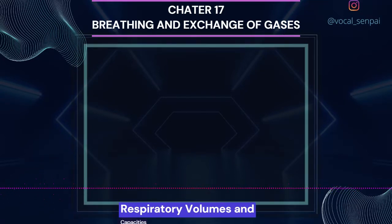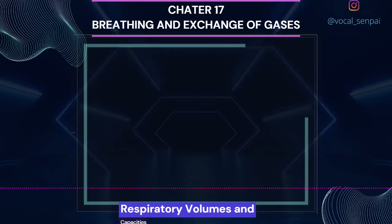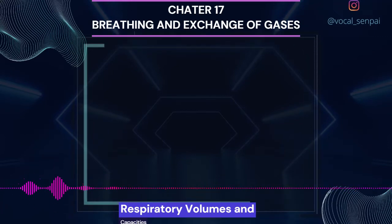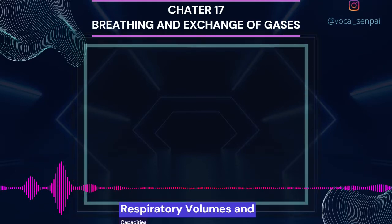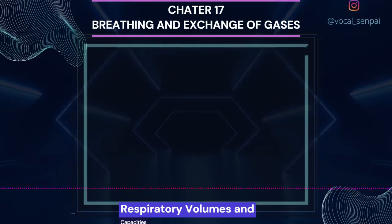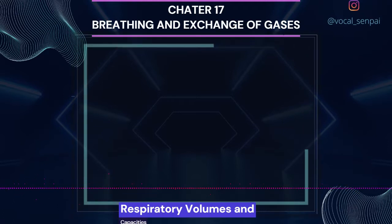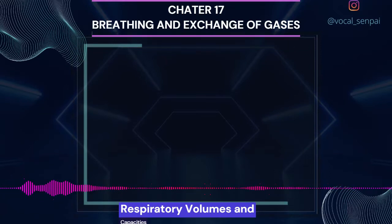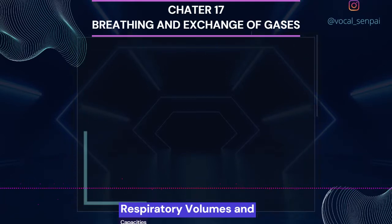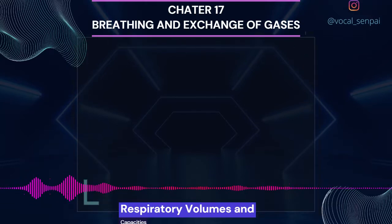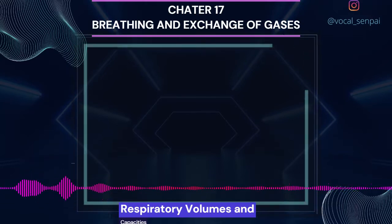Respiratory Volumes and Capacities: Tidal Volume (TV) — volume of air inspired or expired during a normal respiration. It is approximately 500 ml; a healthy man can inspire or expire approximately 6000 to 8000 ml of air per minute. Inspiratory Reserve Volume (IRV) — additional volume of air a person can inspire by a forcible inspiration; this averages 2500 ml to 3000 ml. Expiratory Reserve Volume (ERV) — additional volume of air a person can expire by a forcible expiration; this averages 1000 ml to 1100 ml. Residual Volume (RV) — volume of air remaining in the lungs even after a forcible expiration; this averages 1100 ml to 1200 ml.